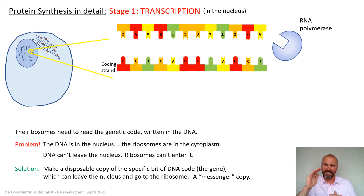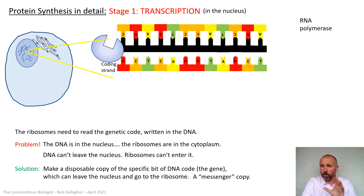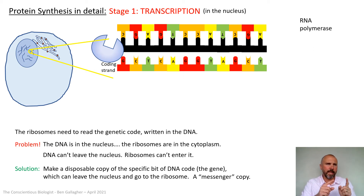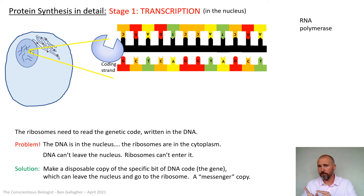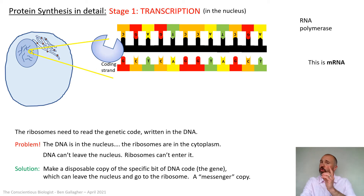Once the strands separate, RNA polymerase can move down through the strand. As it moves along, it makes a complementary copy of the template strand. Because it's complementary to the template strand, it should be the same as the coding strand — so by copying the template strand, you've effectively made a new coding strand. Now, this molecule being built is mRNA — messenger RNA — the messenger molecule we've been talking about.